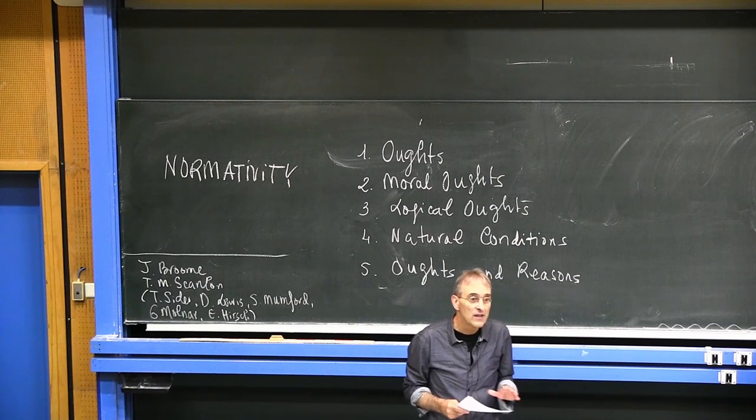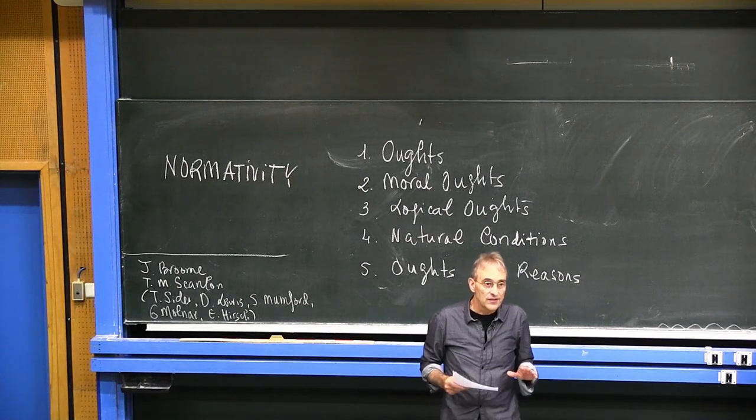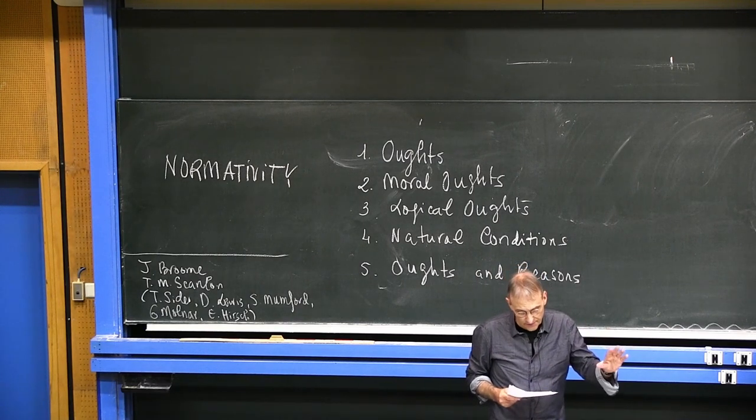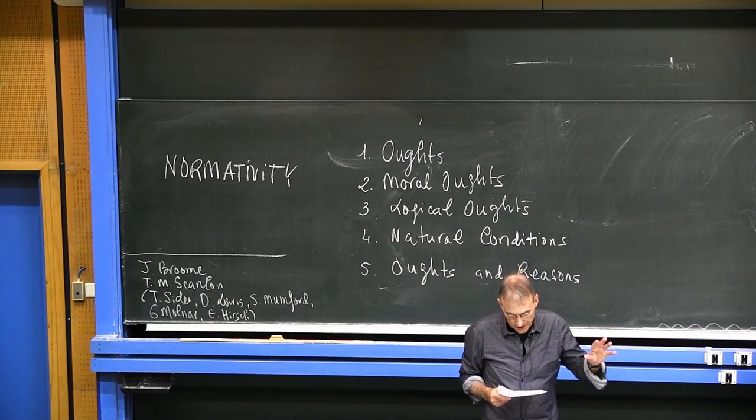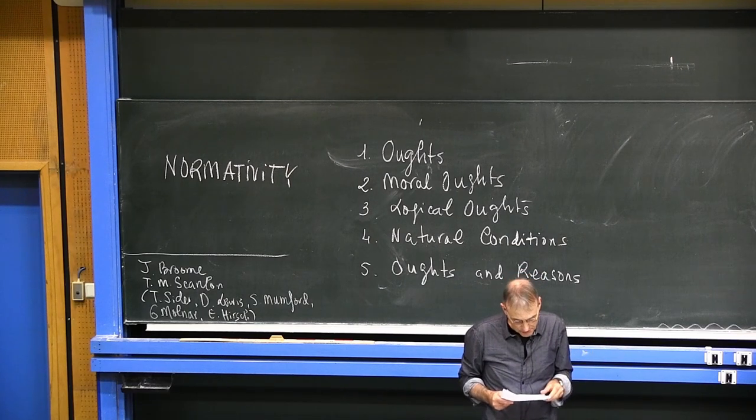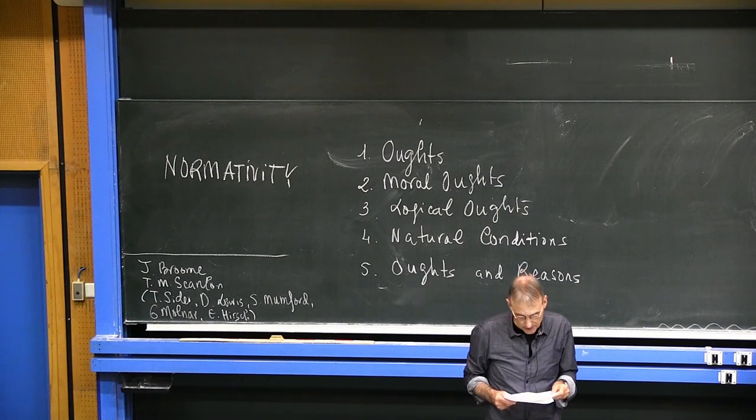So you see there are many sorts of ought sentences, prescriptive and predictive, owned and unowned, qualified and unqualified, objective and prospective.